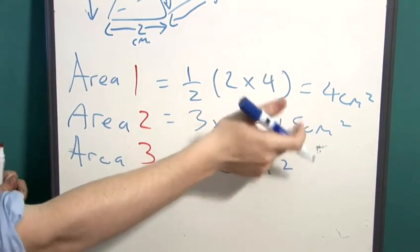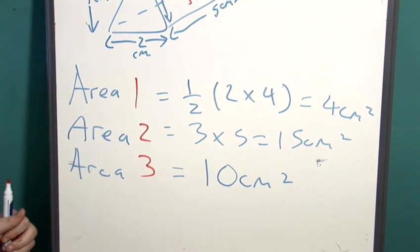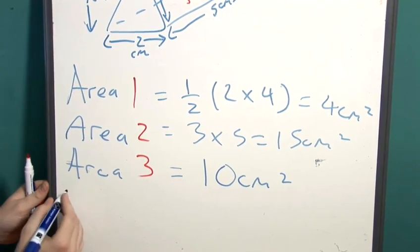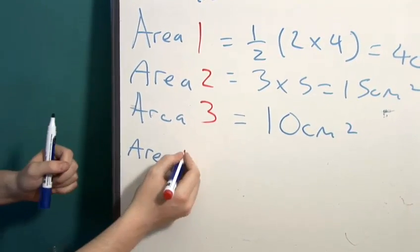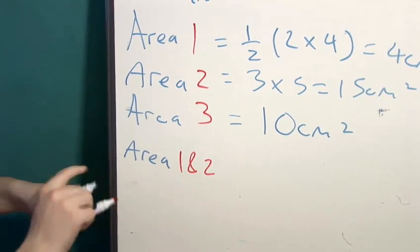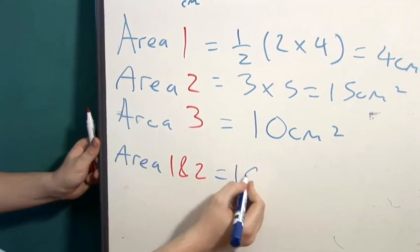What we do now is we add these two together, fifteen and four, to give us nineteen, so that's the area of one and two, nineteen centimetres squared.